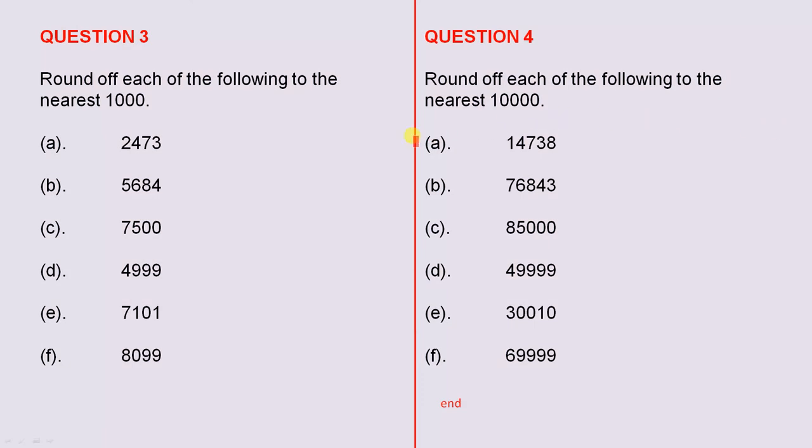Question three: round off each of the following to the nearest one thousand. Here we have six questions, and exactly the same as the previous slide, the same principle applies. Here you see three zeros.